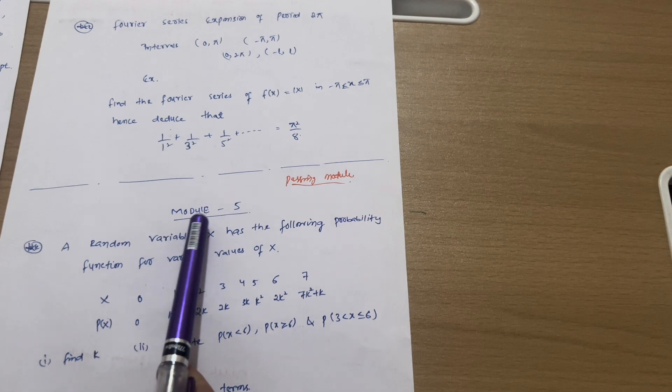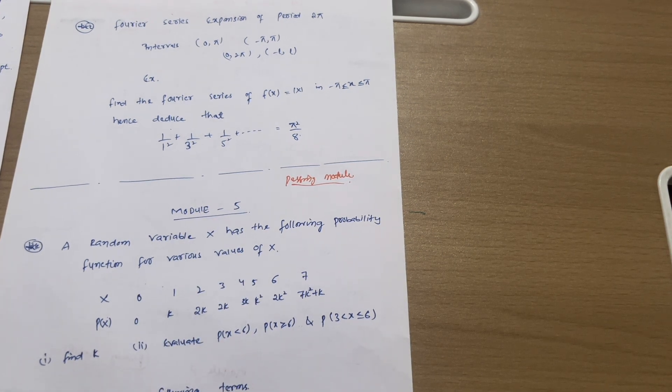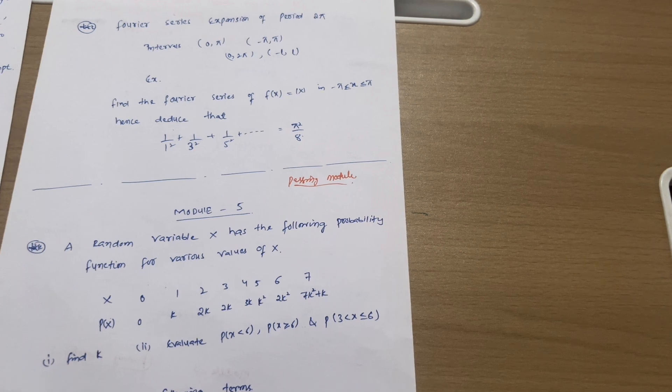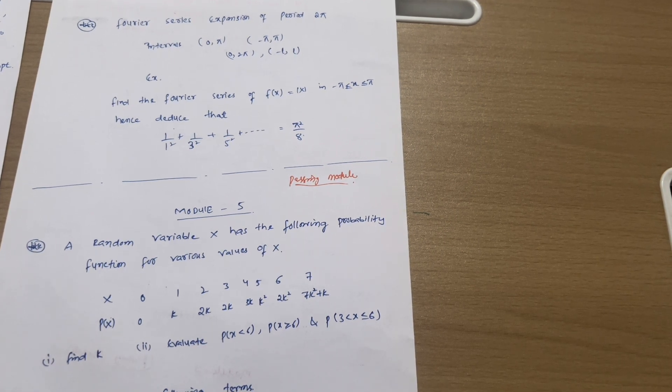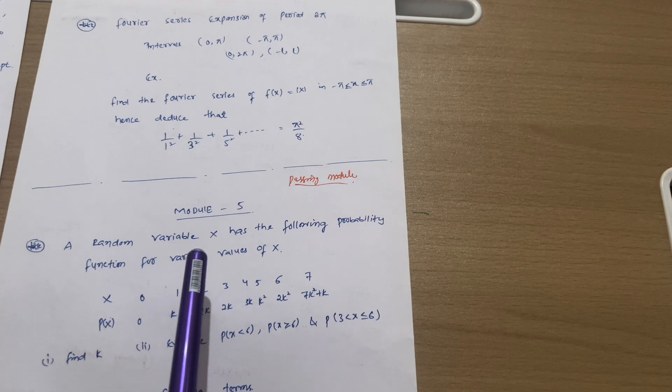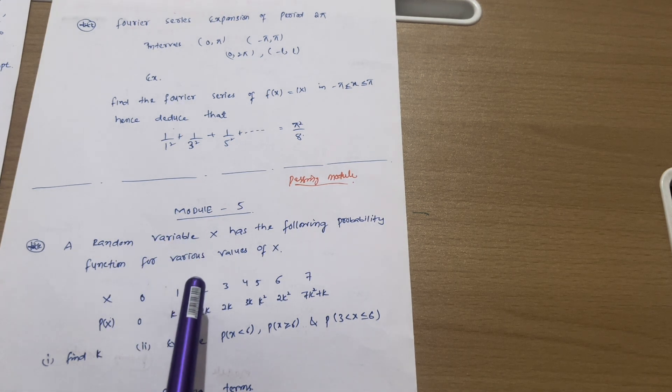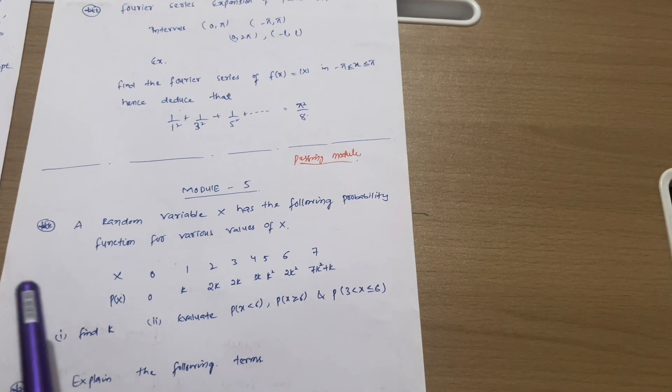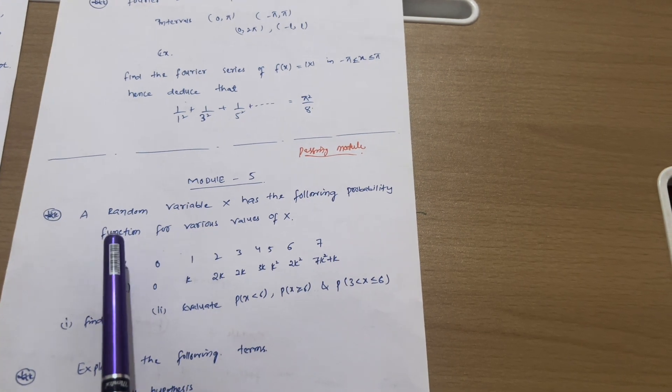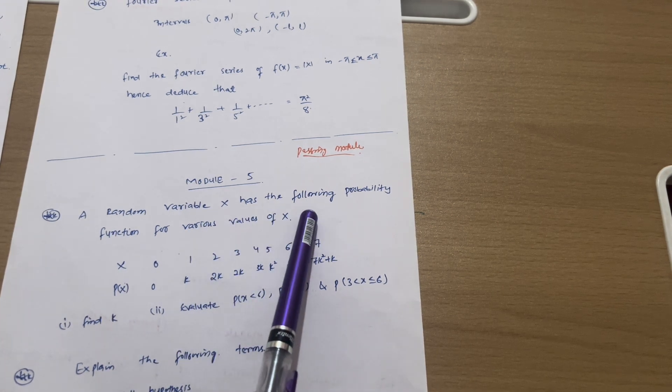Next passing module we have module fifth, it is the probability portion. I hope you all are aware of probability from your previous classes like 11th or 12th. This is a simple module as compared to 11th and 12th probability chapter. This is too much easy so you can easily get 20 marks from this module also. Videos are available on this particular probability which you will find in the description.